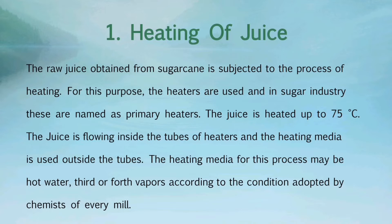The first process of the boiling house is heating of juice. The raw juice obtained from sugar cane is subjected to the process of heating. For this purpose, heaters are used and in the sugar industry these are named as primary heaters. The juice is heated up to 75 degrees Celsius. The juice flows inside the tubes of the heaters and the heating media is used outside the tubes. The heating media for this process may be hot water, third or fourth vapors according to the condition adopted by chemists of every mill.